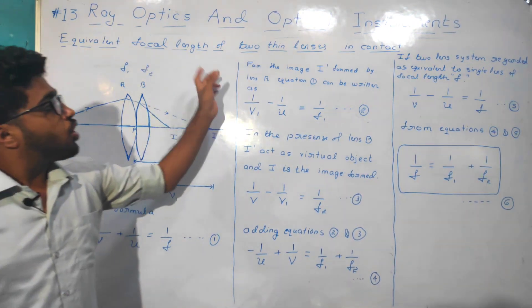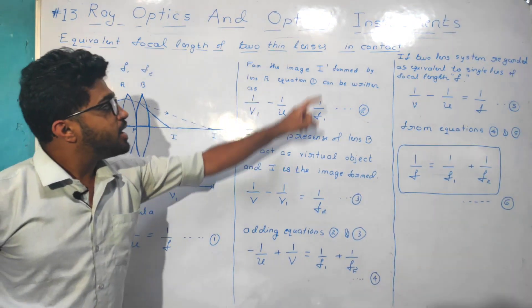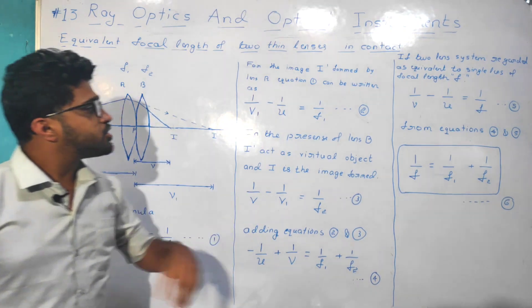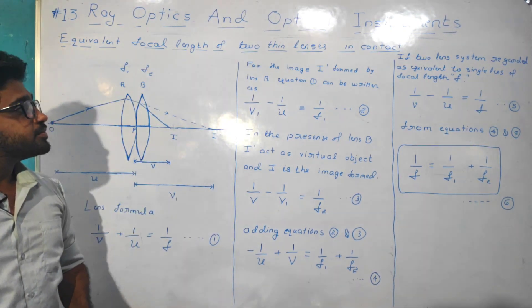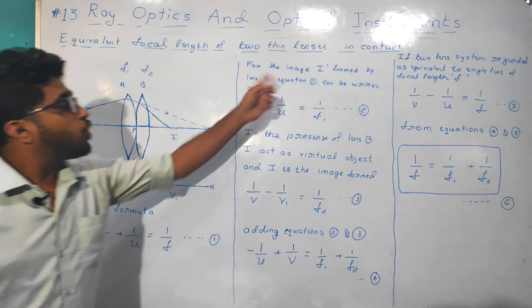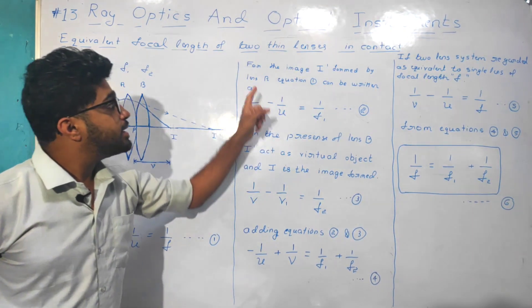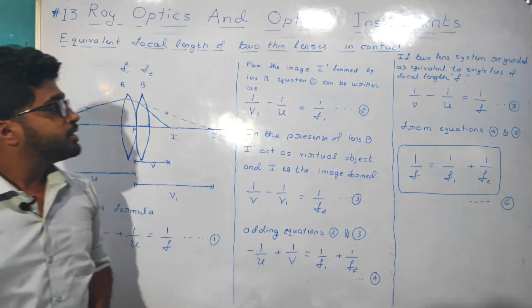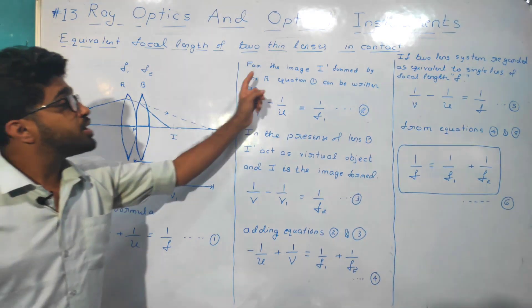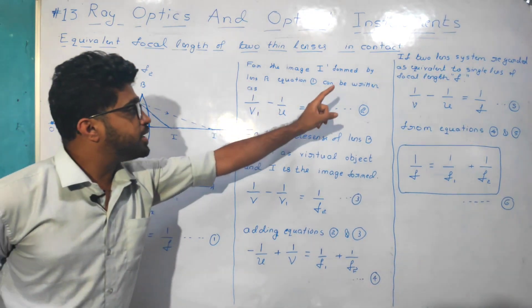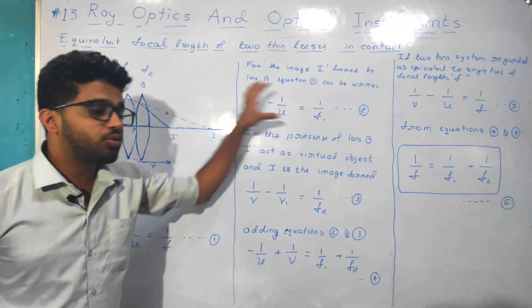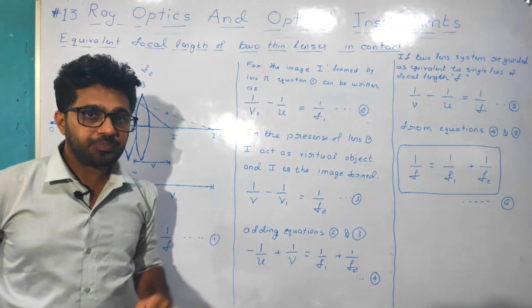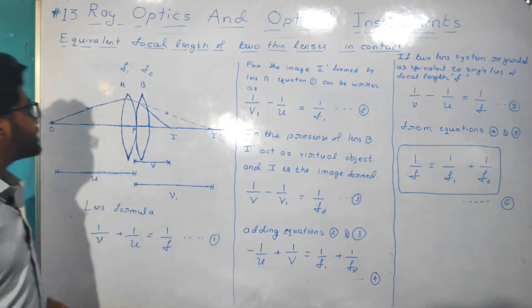For the image I dash, or I prime, formed by Lens A, equation 1 can be written. In the first case, we consider only Lens A is present, and Lens B is absent.